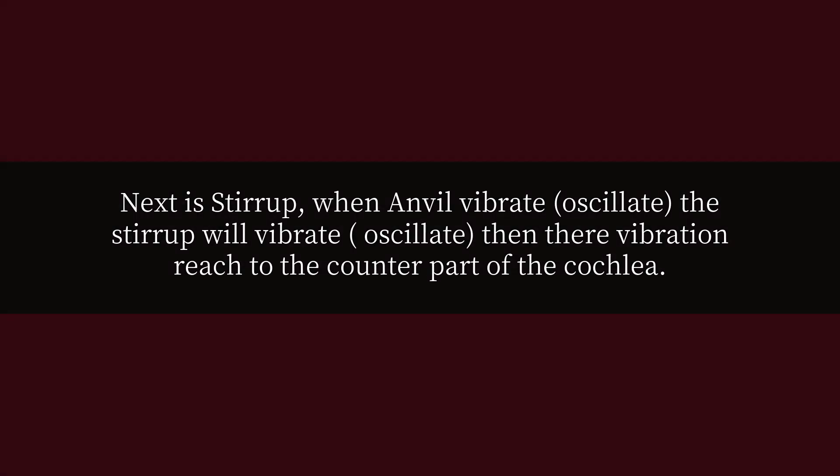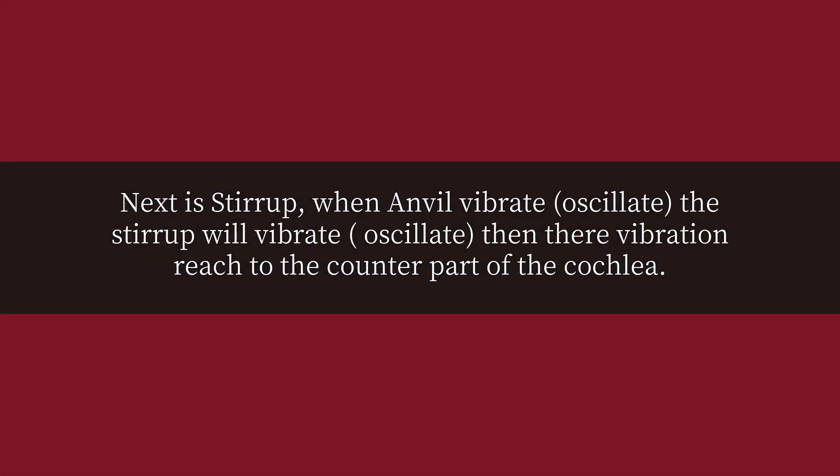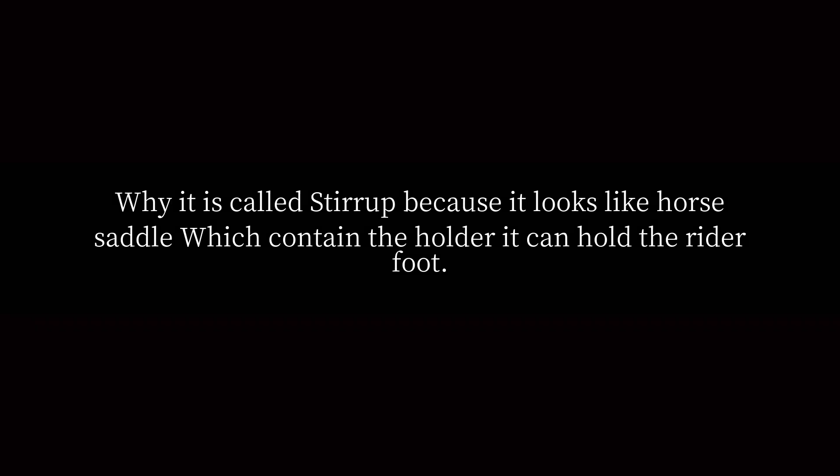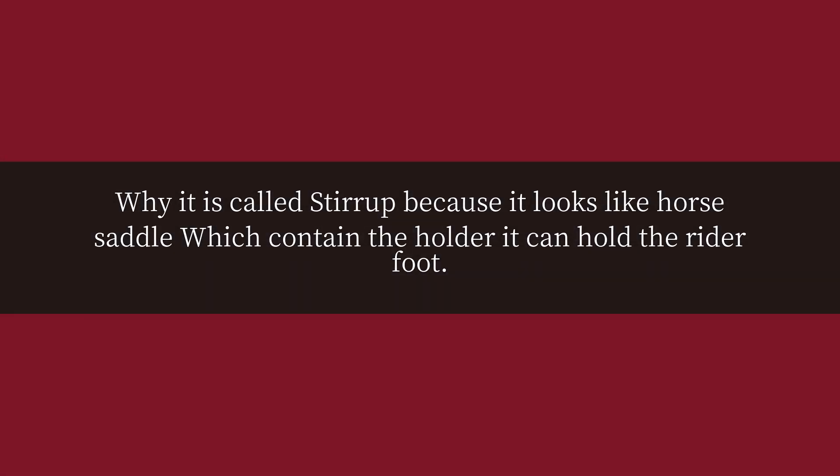Next is the stirrups. When the anvil vibrates and oscillates, the stirrup also vibrates and oscillates, and then the vibration reaches the cochlea. It is called the stirrup because it looks like a horse saddle which contains a holder that can hold the rider's foot.